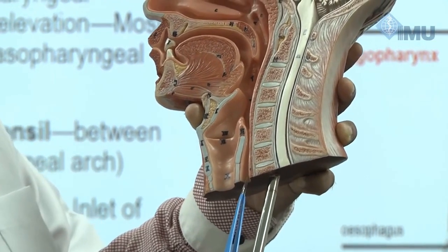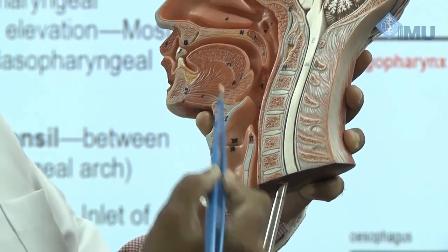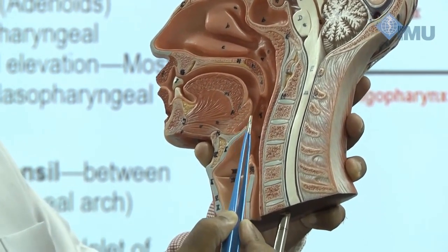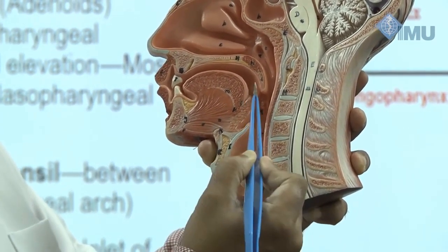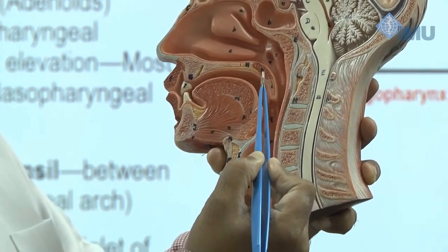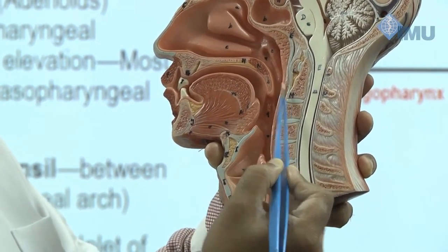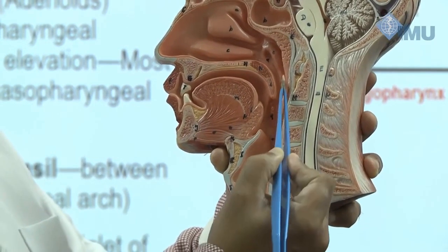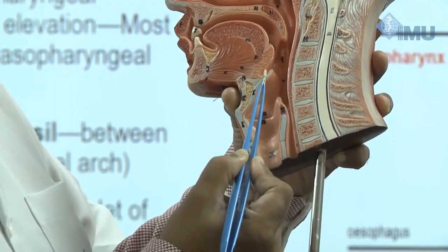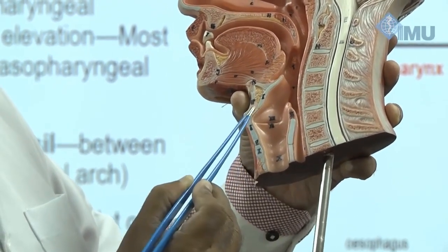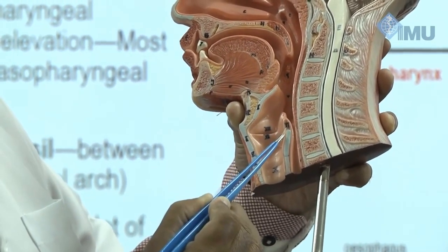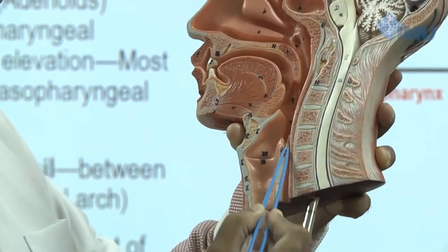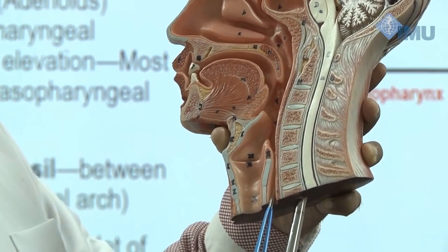When food enters the oral cavity, two things happen. Number one: the soft palate becomes vertical. There are two muscles — tensor palati and levator palati. Tensor palati tenses it and levator palati elevates it, so the soft palate completely closes the isthmus so food cannot go into the nasopharynx. Second: the larynx moves up and the epiglottis goes down, closing the laryngeal inlet. Then food goes to the laryngopharynx and into the esophagus.